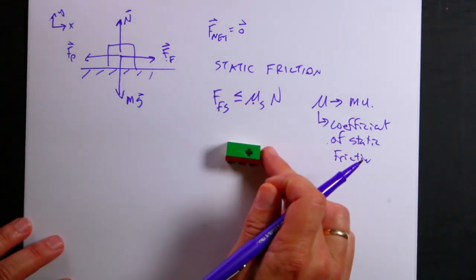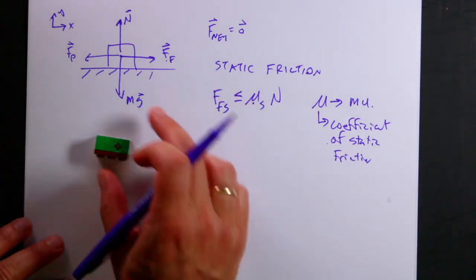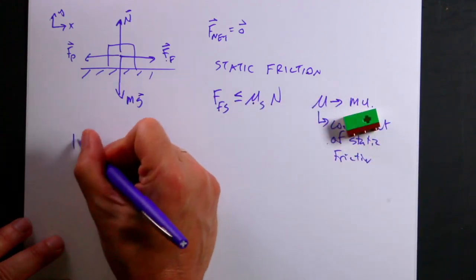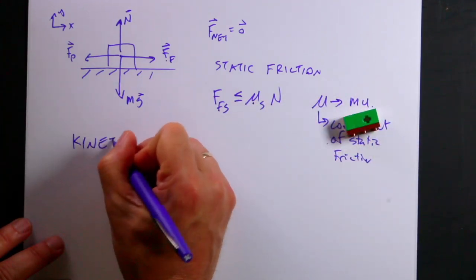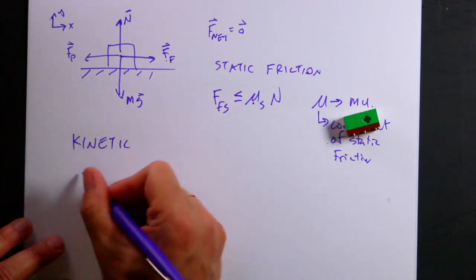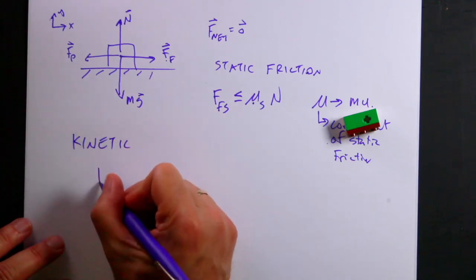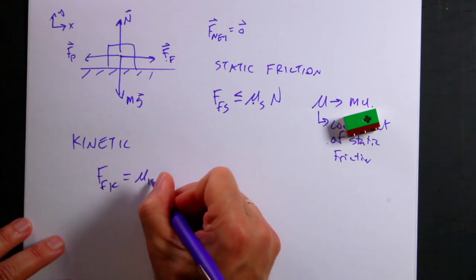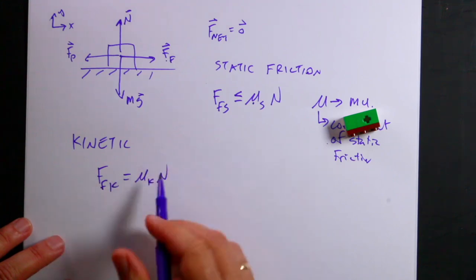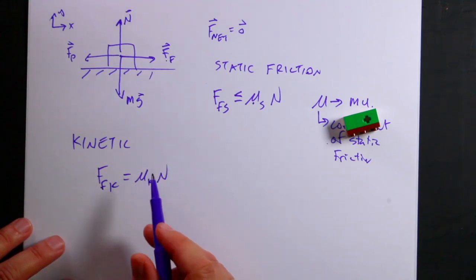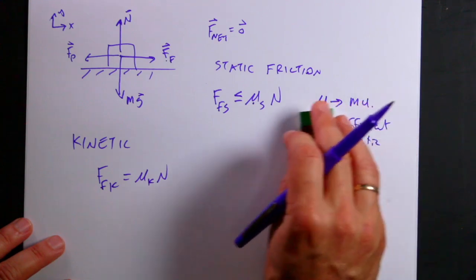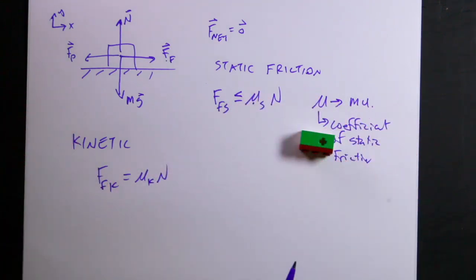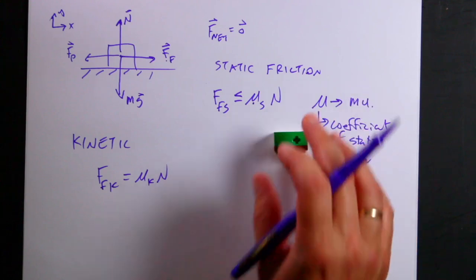The coefficient of friction depends on the types of surfaces — you have to look it up. Steel on glass is different from wood on wood or rubber on asphalt. Once the object starts sliding, we have kinetic friction: F friction kinetic equals mu K times N, where mu K is the coefficient of kinetic friction — that's a constant value. These are both just models; they're not perfect but they are useful.